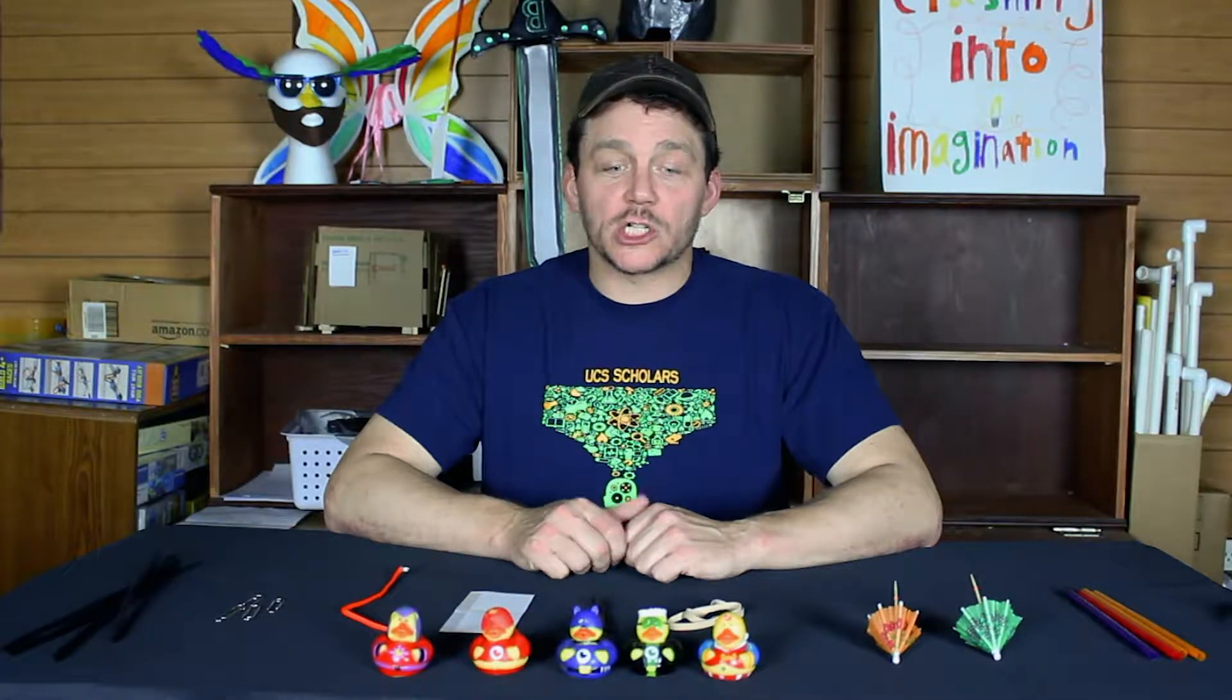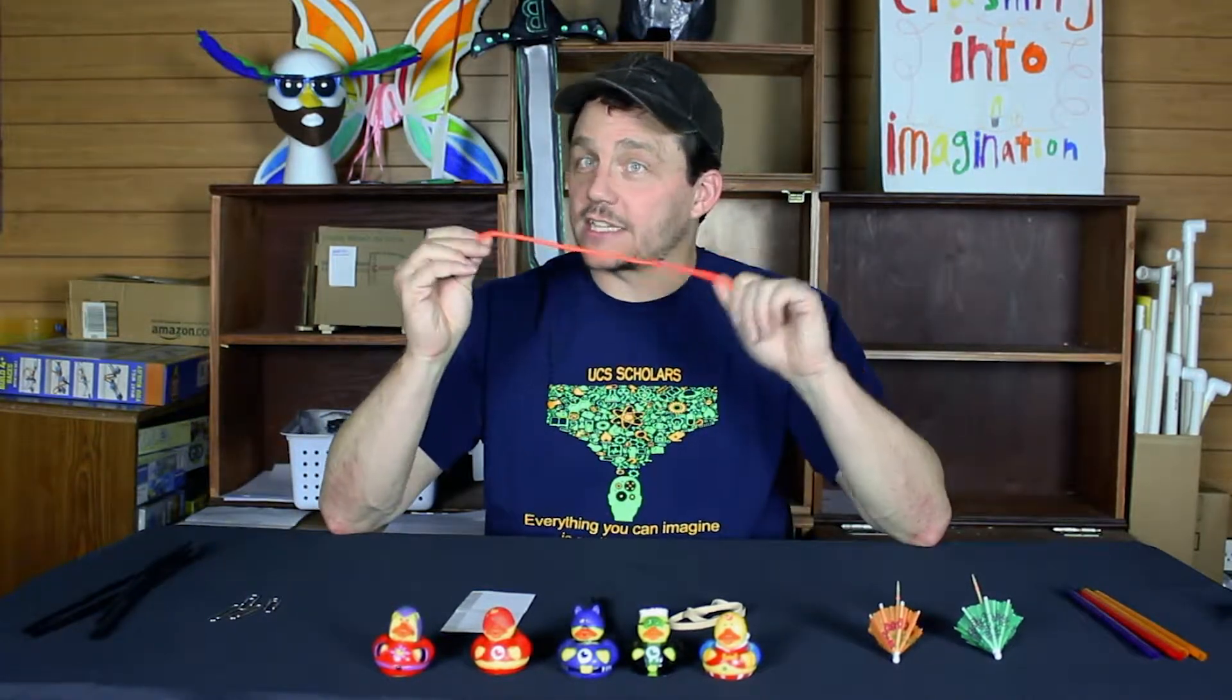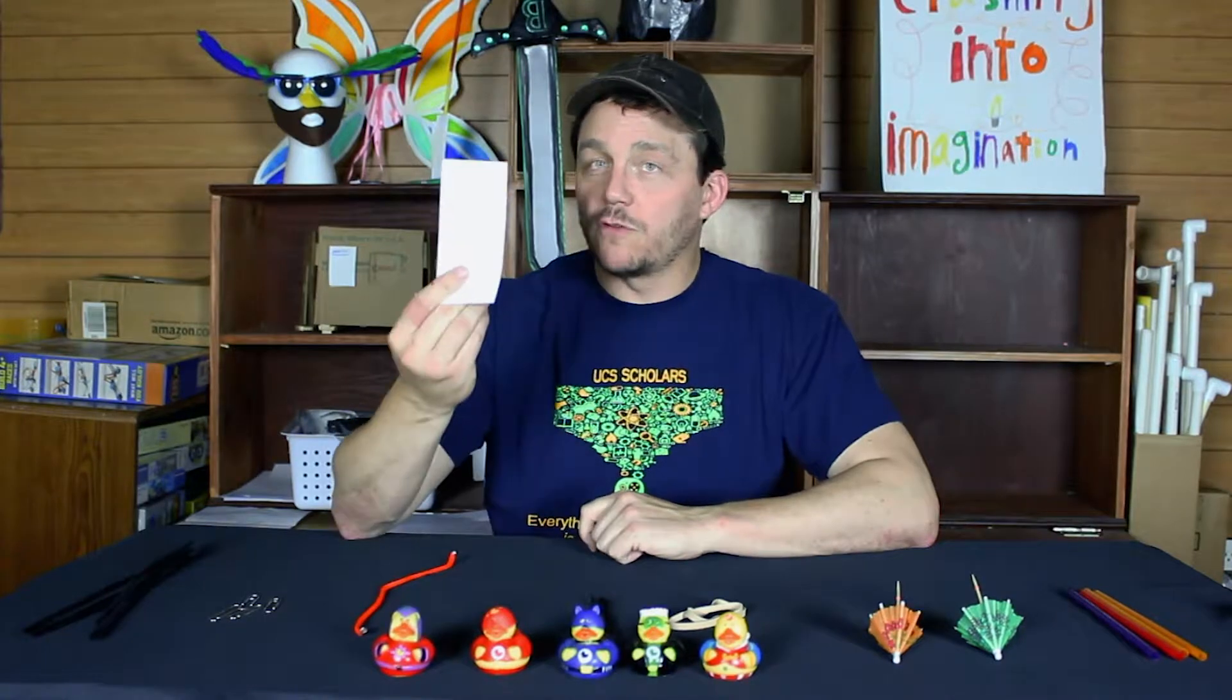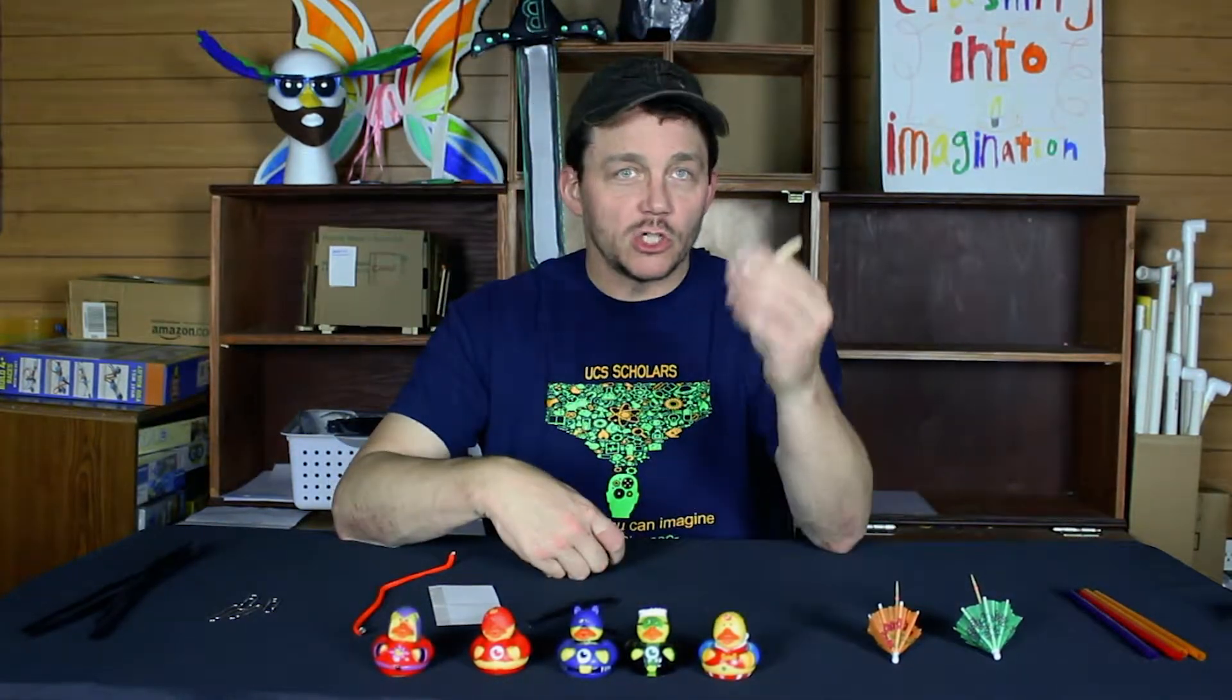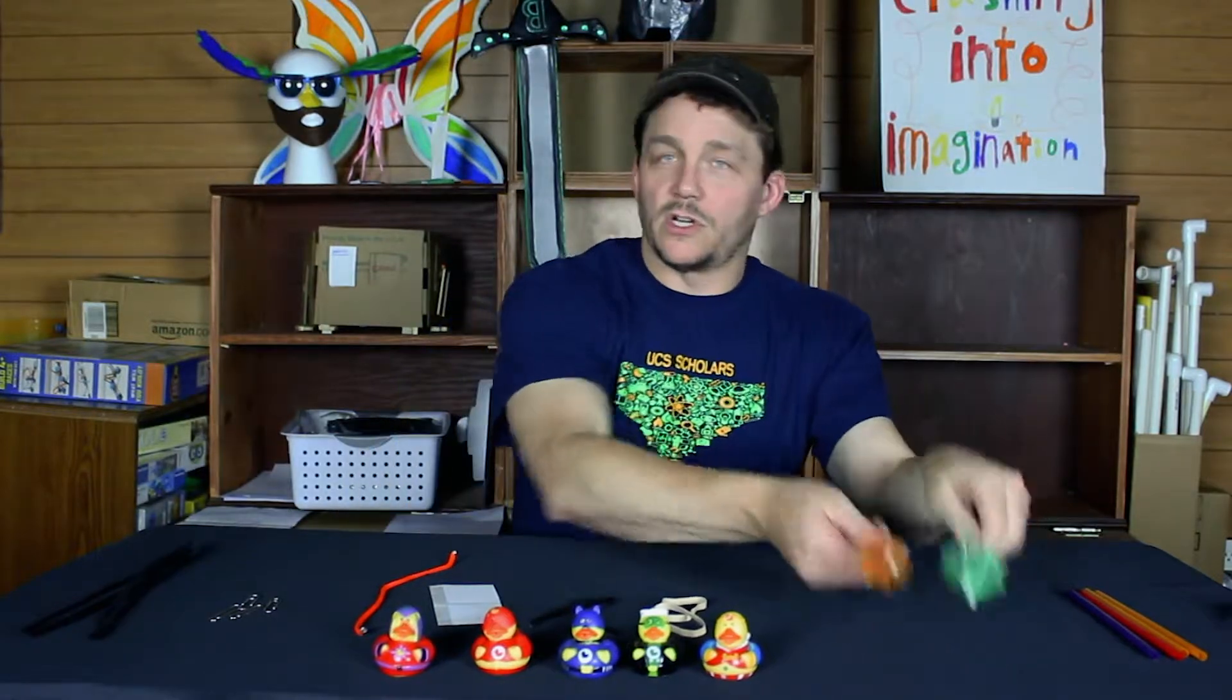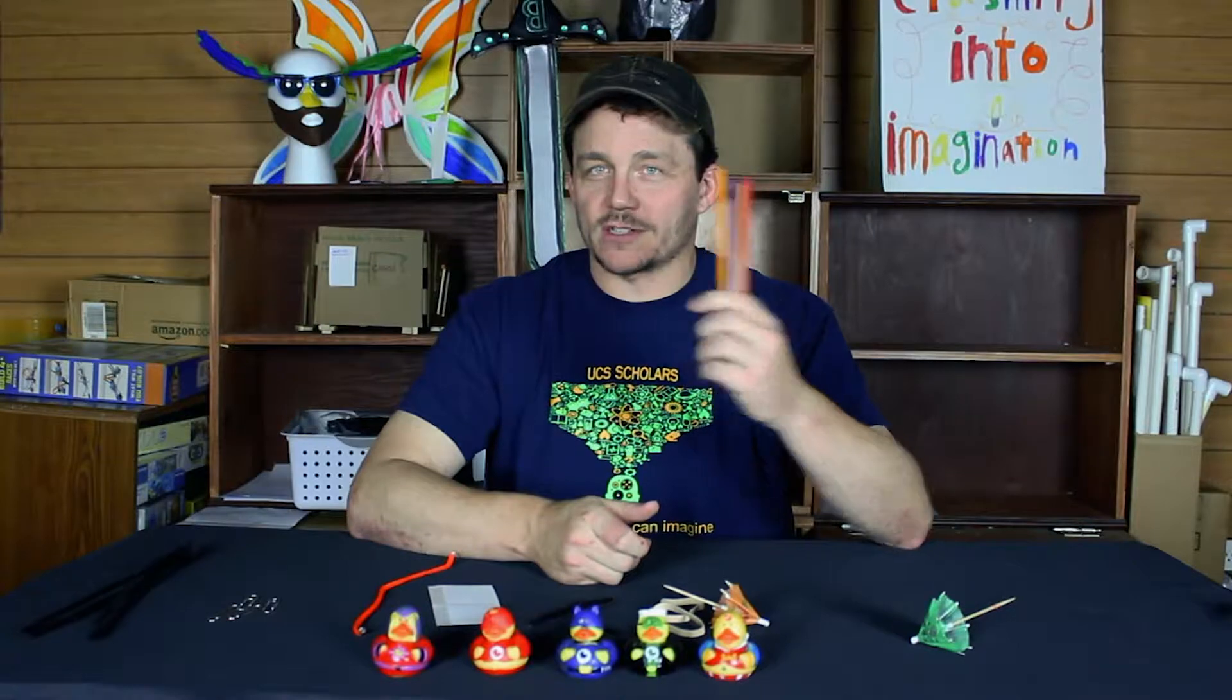For this challenge we have to build a free-standing structure which includes as many of these ducks as possible. We'll build this using 4 pipe cleaners, 4 paper clips, 12 inch length of string, 4 mailing labels, 4 twist ties, 2 rubber bands, 2 cocktail umbrellas, and 4 straws.